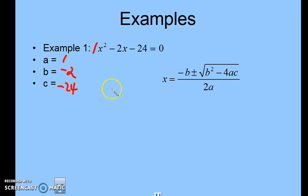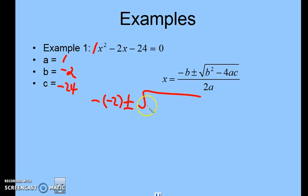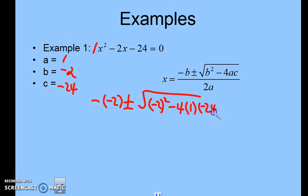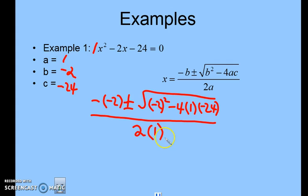Let's plug it in. We have negative b — b is negative 2 — so we write negative of negative 2. Plus or minus the radical of b squared, which is negative 2 squared. Minus 4 times a, which is 1, times c, which is negative 24. Notice we put parentheses around each substituted value. Divided by 2 times a, which is 1.